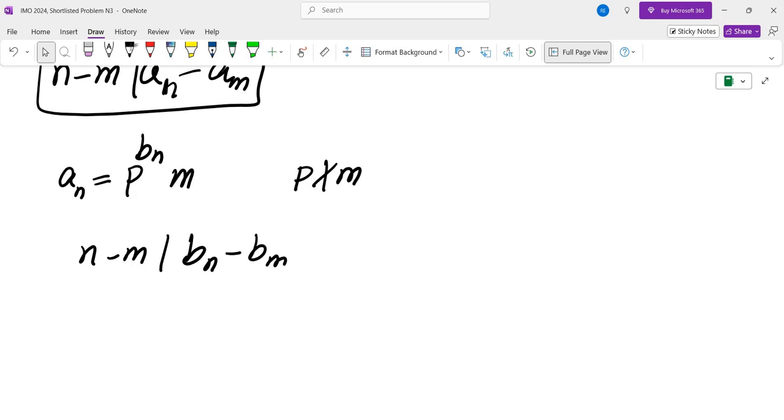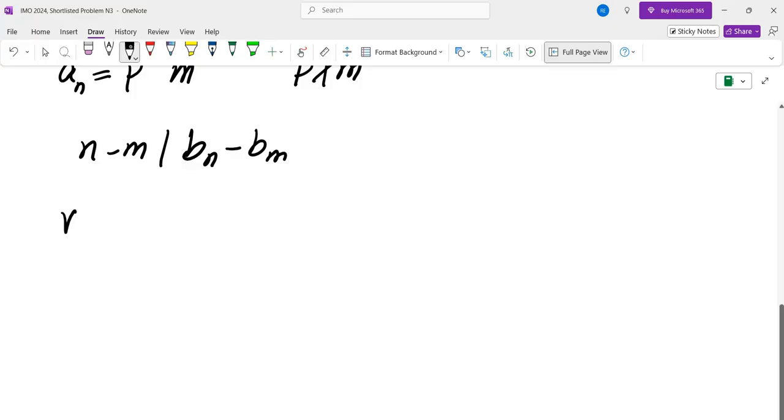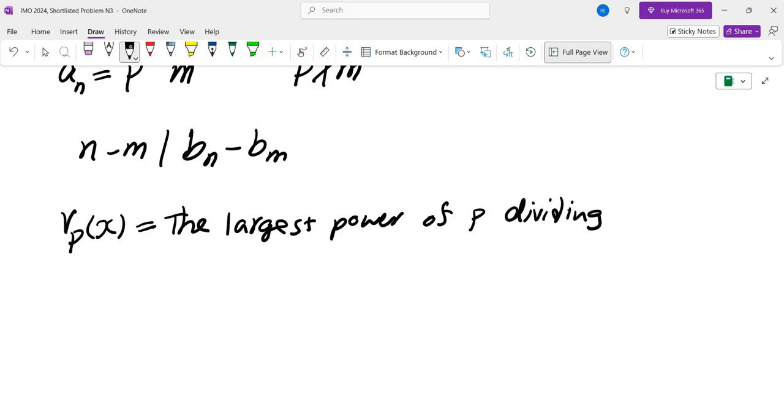We have a notation for this exponent. We're going to call that VP. So VP of X is the largest power of P dividing X. In other words, P to the power of VP of X divides X, but P to the power of VP of X plus 1 does not divide X. And here, P is a prime.